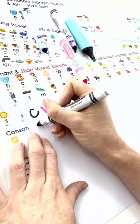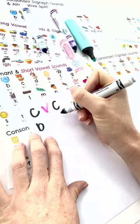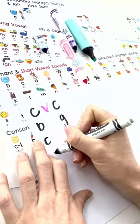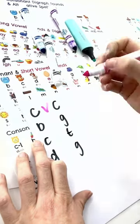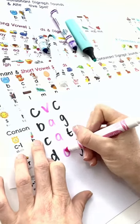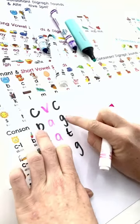So these words like, well, this is going to be annoying switching color. Bag, cat, dog are all CVC words. Hang on, this was bag, cat, dog, because we've got a consonant, vowel, consonant.